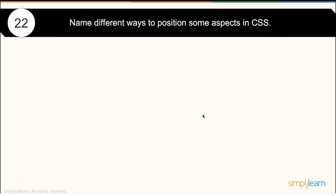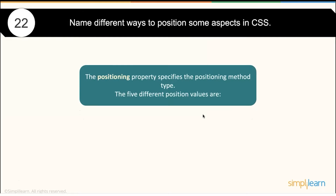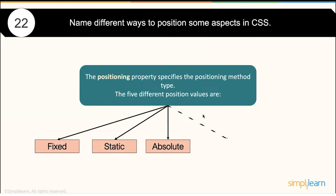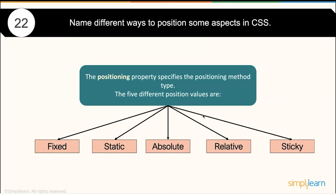Name the different ways to position elements in CSS. There are 5 different position values: fixed, static, absolute, relative, and sticky. These are the 5 different positioning options available in CSS.